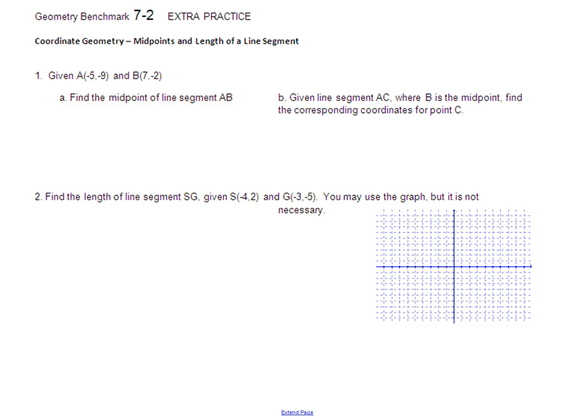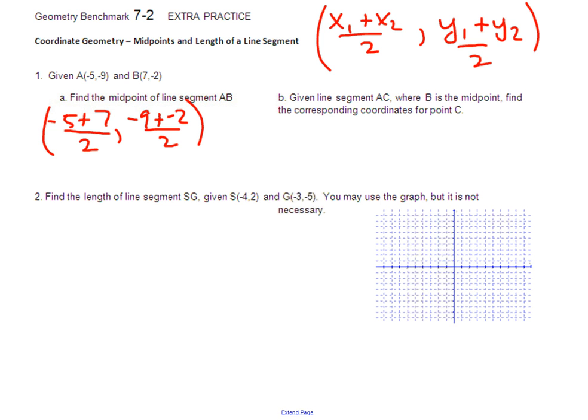First problem: given two points, find the midpoint. Well, the midpoint formula—you're going to take your x values, add them up, divide by two. Take your y values, add them up, divide by two, and that's it, make it an ordered pair. So it's pretty straightforward. Just take your negative five and your seven, add them up, divide by two. Comma. Negative nine and negative two, add them up, divide by two.